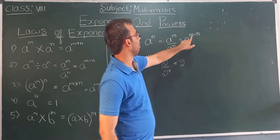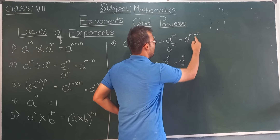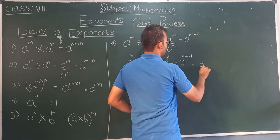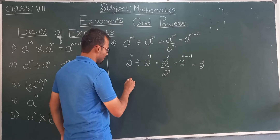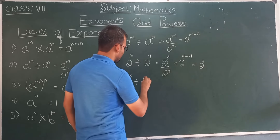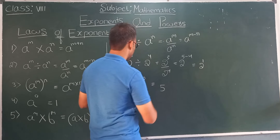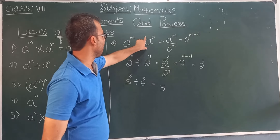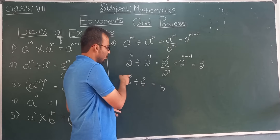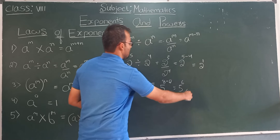Using the law a to the power m minus n, where m is 5 and n is 4, we get 2 to the power 5 minus 4, which is 2 to the power 1. One more example: pi to the power h divided by pi to the power 2. Whenever the bases are the same, write the base with m minus n as the power, so pi to the power h minus 2, which equals pi to the power 6.